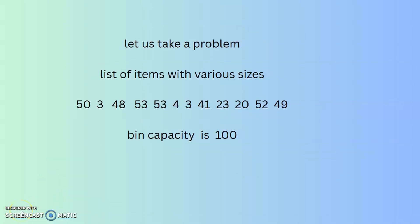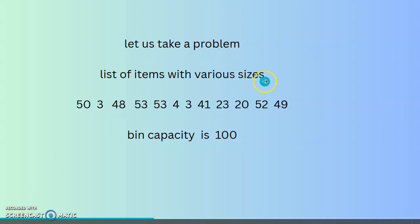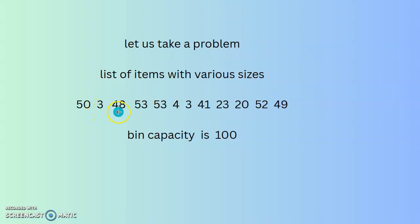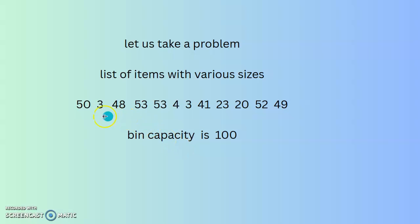Let us take a problem. The list of items with various sizes is: 50, 3, 48, 53, 53, 4, 3, 41, 23, 20, 52, and 49. The bin capacity is 100. We have to find the minimum number of bins required to accommodate all these items of various sizes.